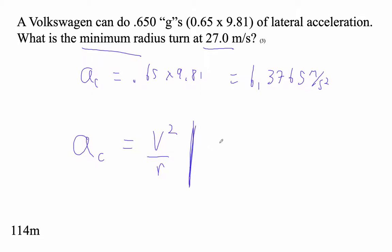And so 6.3765 is equal to v squared divided by - oh, v is 27 squared, right - divided by the radius. This is like higher mathematics. We can do it. We can do it.